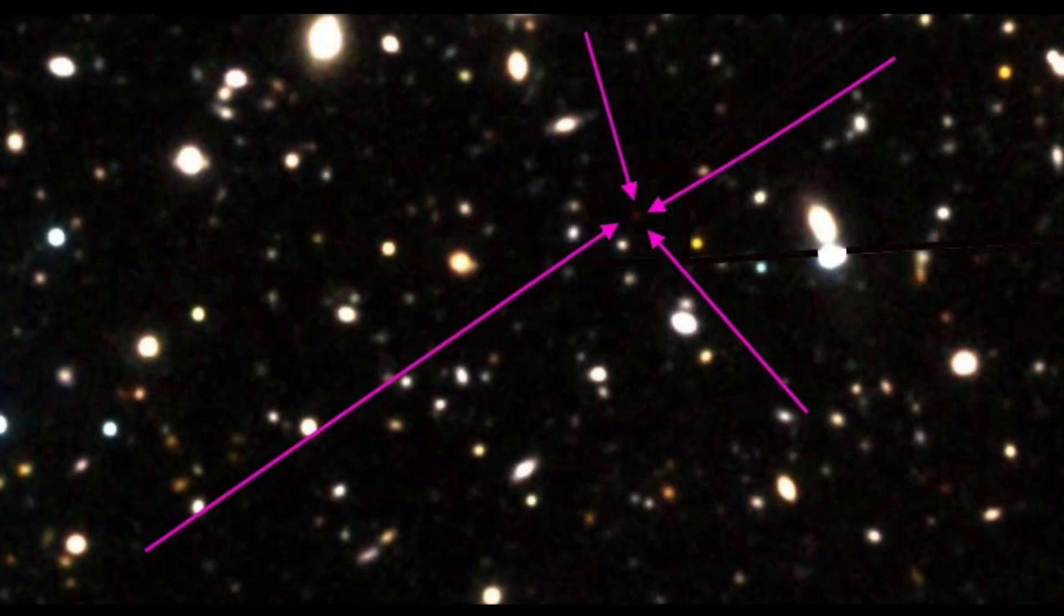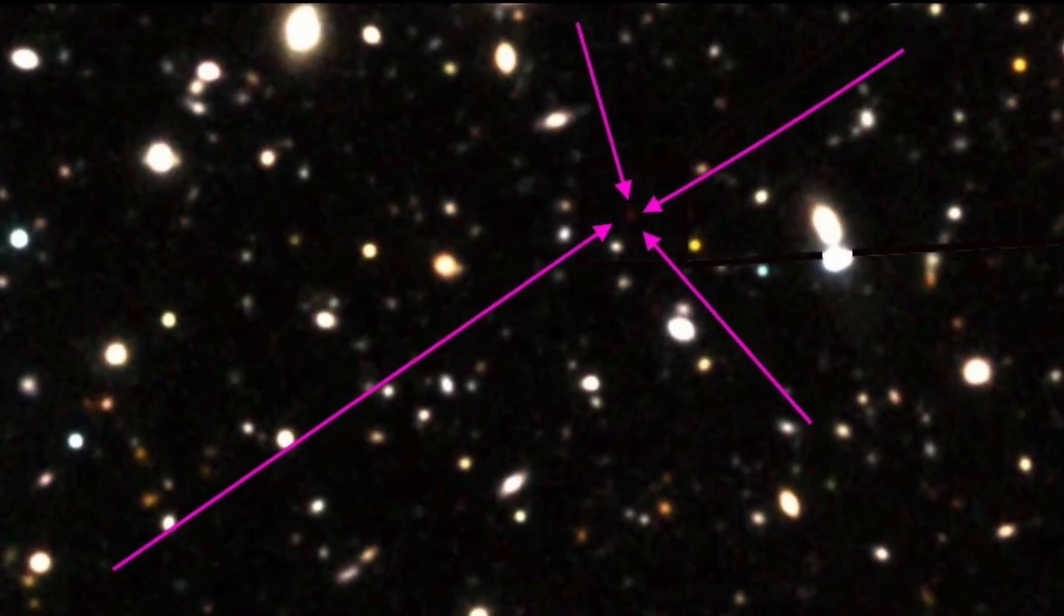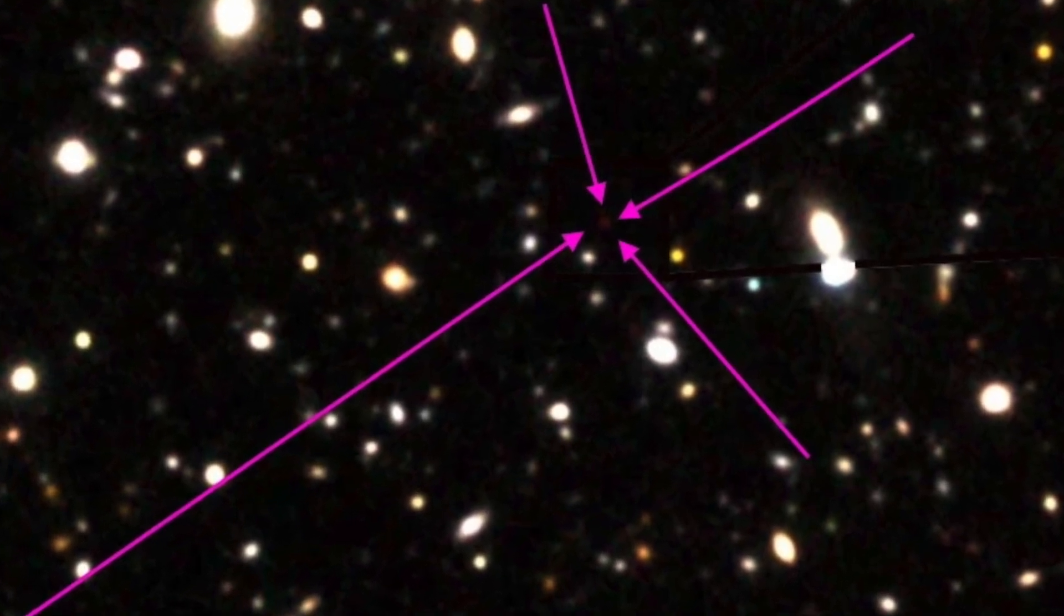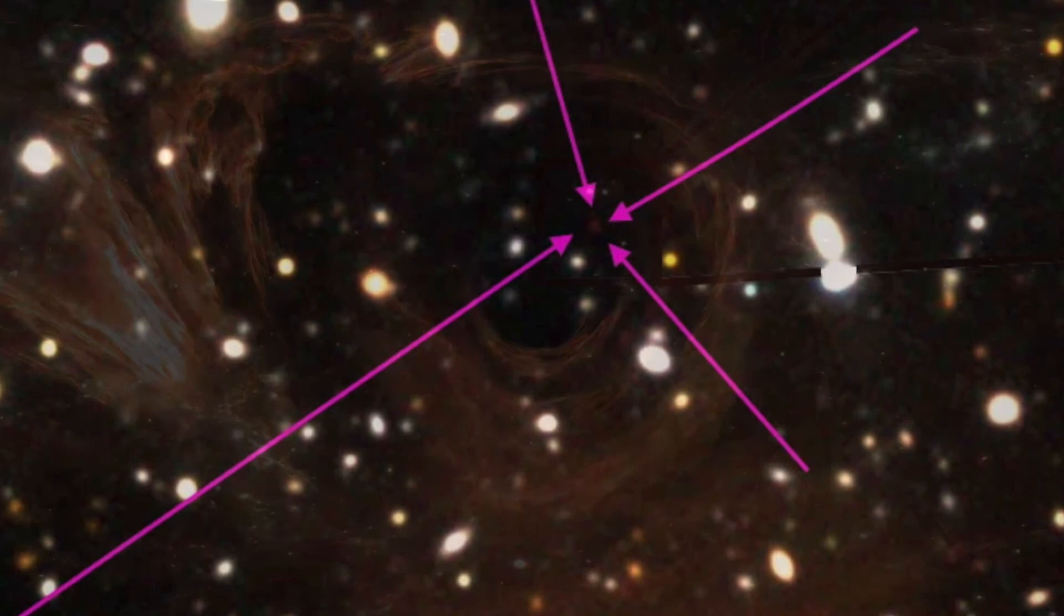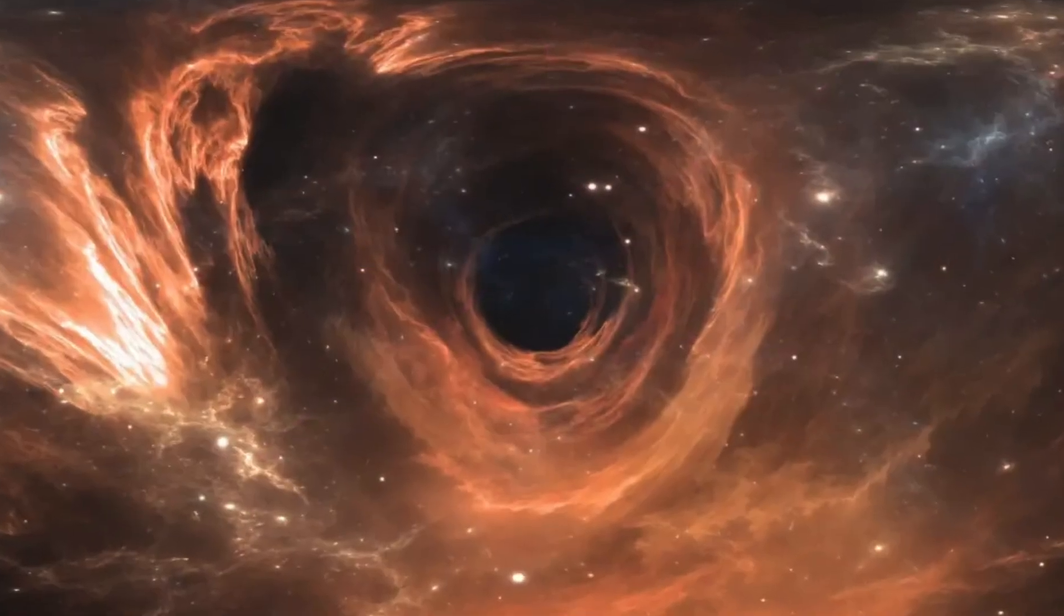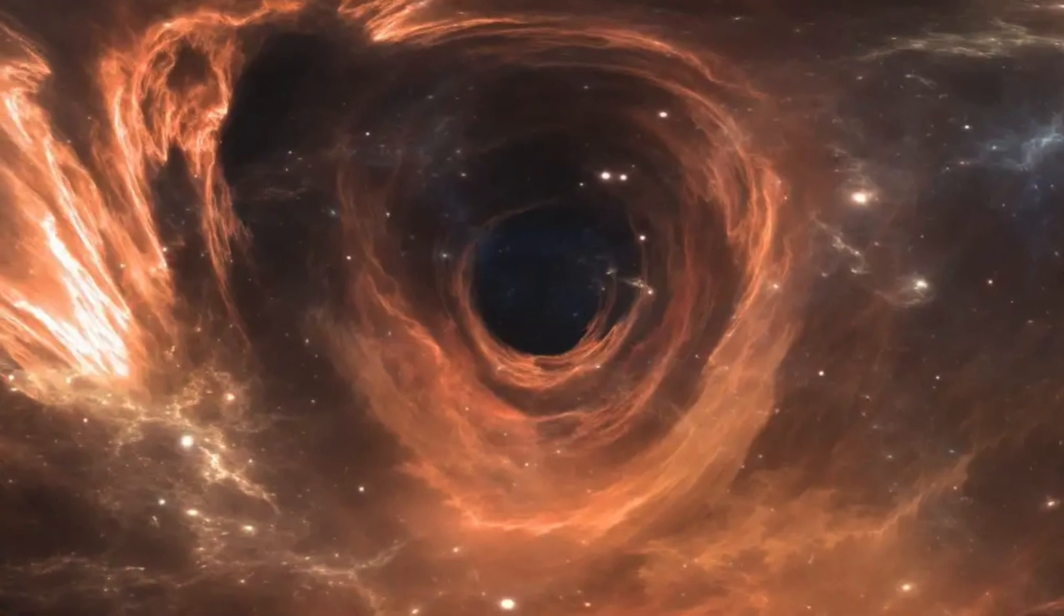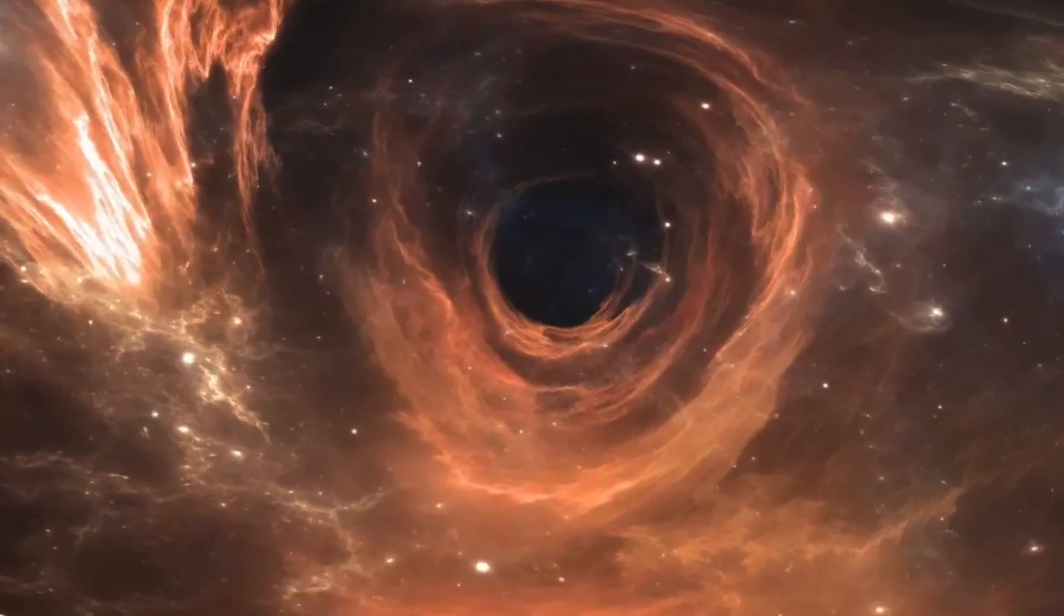Now researchers suggest two new possibilities to explain the extreme energy emitted from the galaxy. On the one hand, it might have a supermassive black hole – 100 million times as massive as the Sun at its center. That would be the oldest black hole that science ever observed.